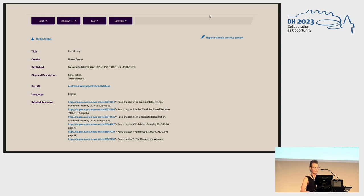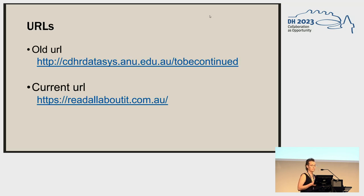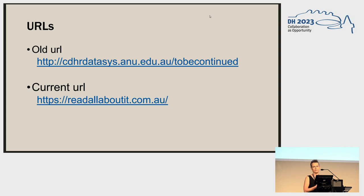Having TBC hosted on a university server helped secure this data ingestion process because the NLA was already used to drawing data out of ANU systems. But being on a university server also made the collaboration more difficult in two ways. First, you can see the URL to the old database — retired last week — which embodies the inflexibility of university systems: it's pretty hard to advertise, hard to remember. You can go to the new database now if you like while you're listening — I'd love any feedback, since it was just launched.